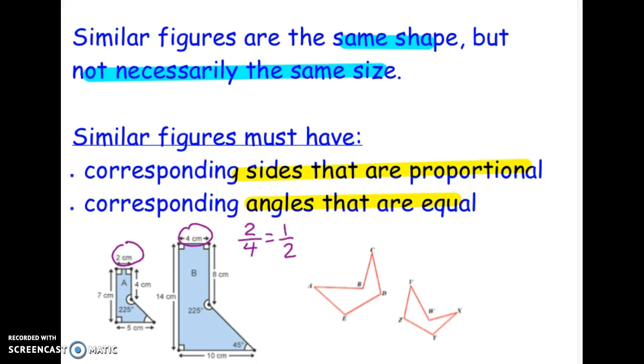If we pick any other pair of corresponding sides here, say for instance, you might do 5 and 10. Five over ten also equals one-half.